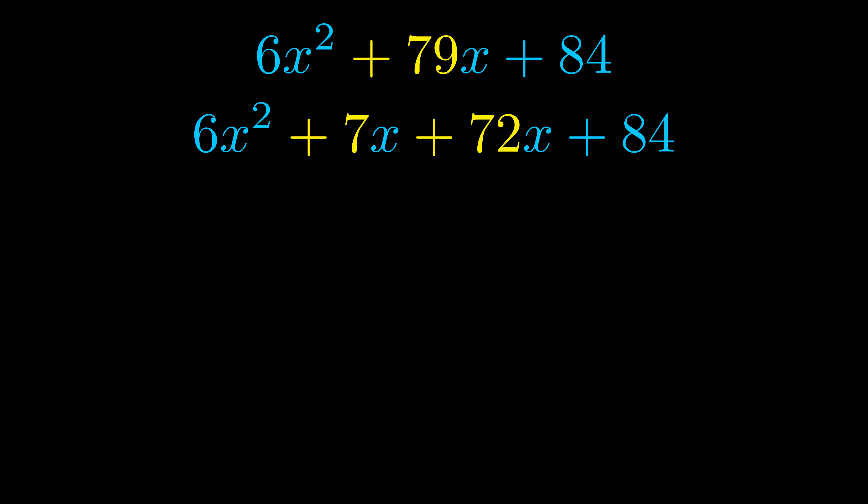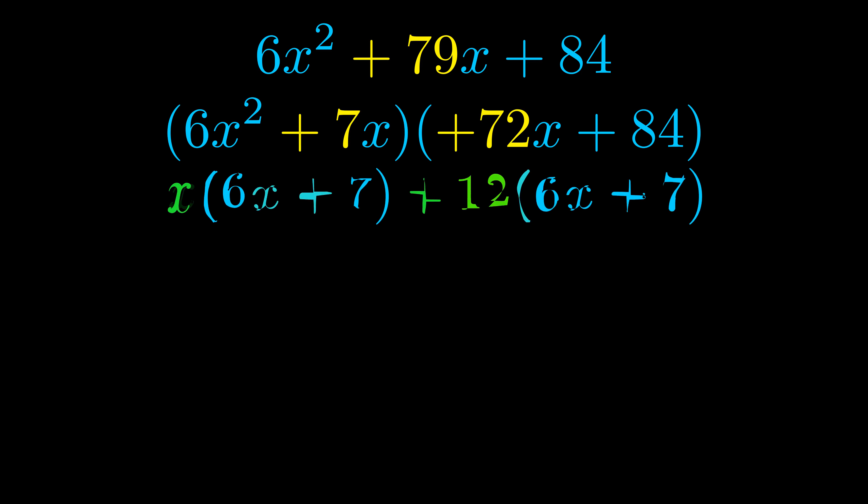Once we've done this, we go ahead and we put parentheses around the first term and the last term, and we do that so that we can take the greatest common factor out of both terms. We can see the greatest common factor is now outside in green.